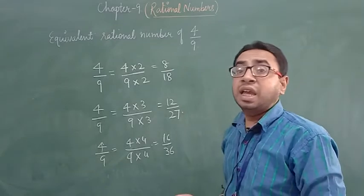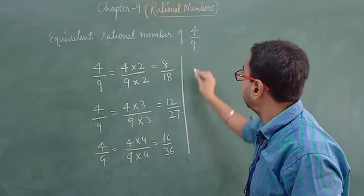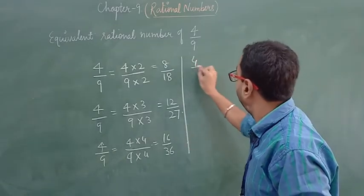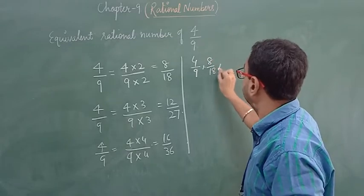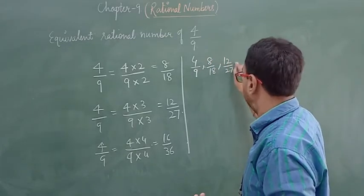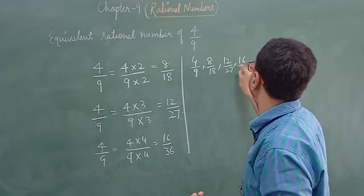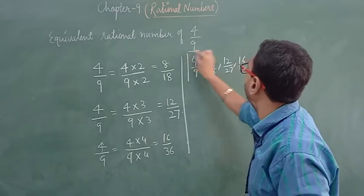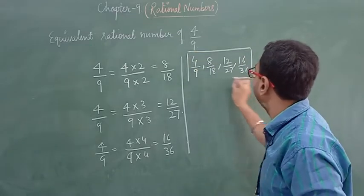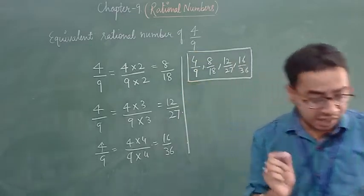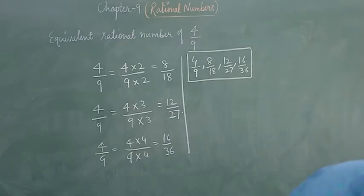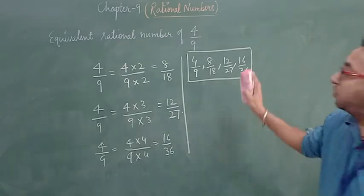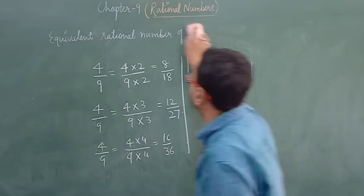So, 4 by 9, 8 by 18, 12 by 27, and 16 by 36 are all equivalent. Next, question number 5: draw a number line and represent the following numbers.